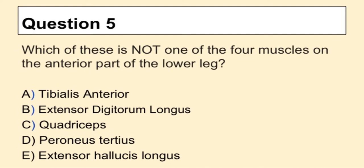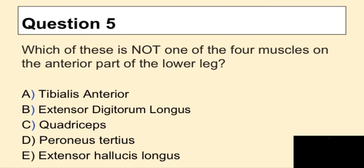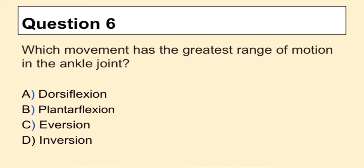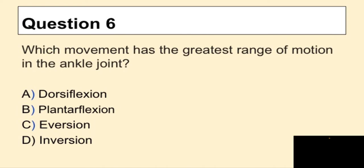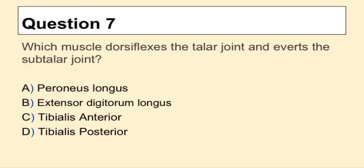Question 5: Which of these is not one of the four muscles on the anterior part of the lower leg? Question 6: Which movement has the greatest range of motion in the ankle joint? Question 7: Which muscle dorsiflexes the talar joint and everts the subtalar joint?